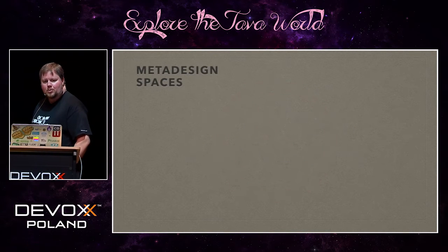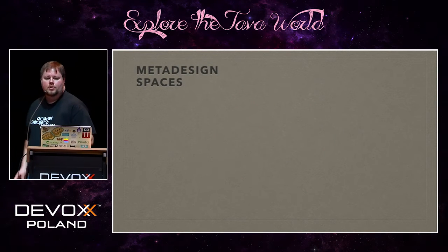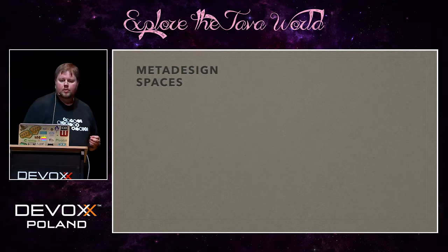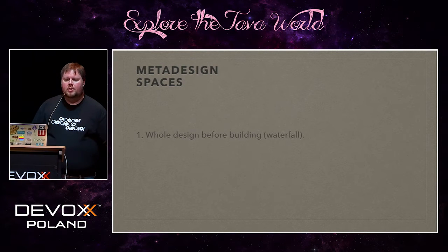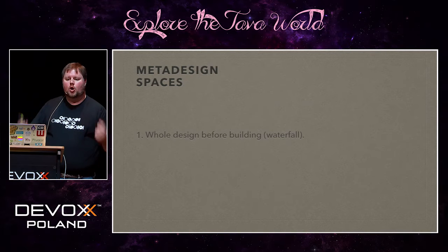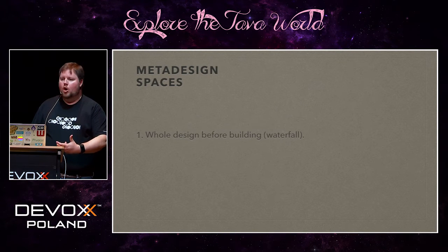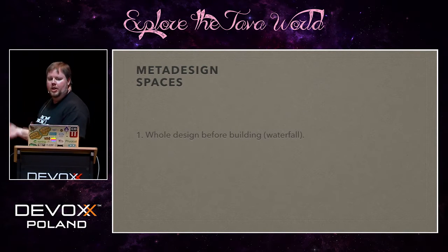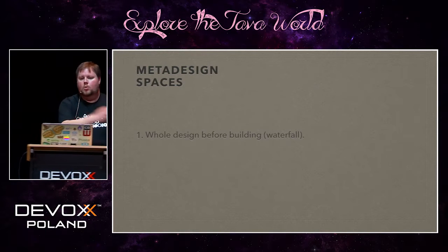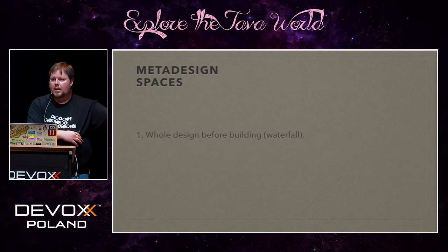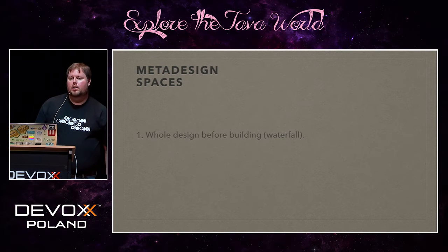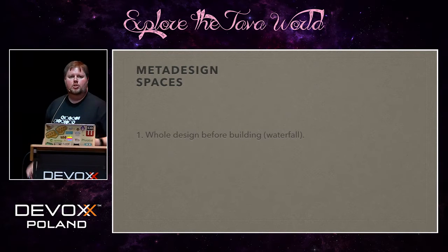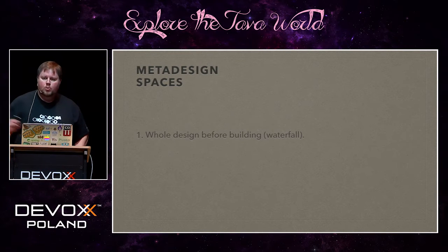So how do we design a system like that? Gabriel switches gears and talks about meta-design spaces. Space one: come up with the whole design before building — and we know what this is, it's waterfall. It's hard to imagine that working because we haven't seen it work even at small or medium scale, and we would need a much higher level of abstraction than we currently possess.